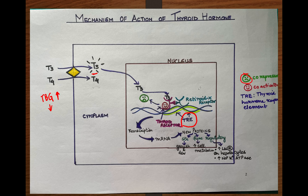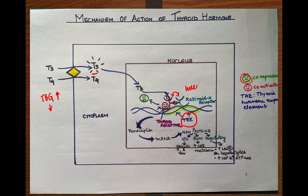When T3 enters the cell, it binds to the thyroid receptor. When it binds, it leads to dimerization — a dimer is formed, meaning two receptors come together. In this case, the second receptor joining with the T3 receptor is a retinoid X receptor, which is a different receptor, so we call it a heterodimer. Had another T3 receptor come together instead of the retinoid X receptor, it would be called a homodimer.